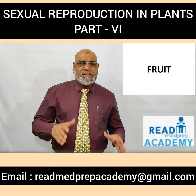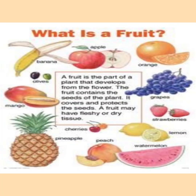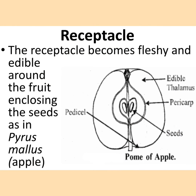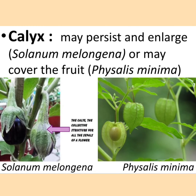A fruit is the part of a plant that develops from the flower; it contains and protects the seeds and may have fleshy or dry tissue. The receptacle of the fruit sometimes becomes fleshy and edible, enclosing the seeds, as in Pyrus malus (apple) — in the image you can see the edible thalamus formed by the receptacle with the pericarp and seeds inside. The calyx may sometimes persist and enlarge with the fruit, as in brinjal (Solanum melongena), or in some fruits like Physalis minima the calyx entirely covers the fruit.